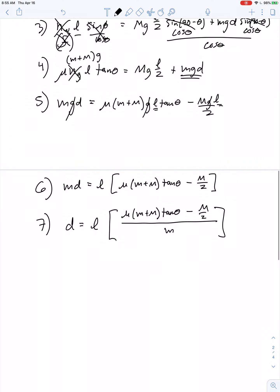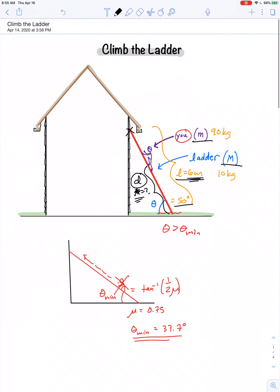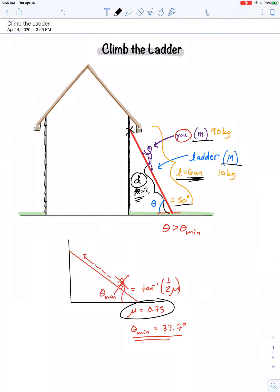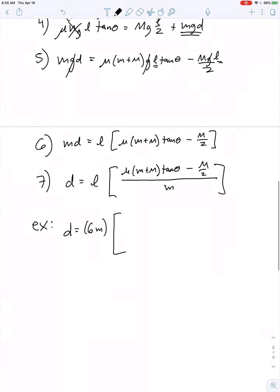Let's see what we get if we plug in the values given in this example problem. We would get d equals 6 meters times, I believe we said the coefficient of friction is 0.75, times, his mass is 90, the mass of the ladder is 10, so this comes out to 100, and then he leaned the ladder at 50 degrees, and then capital M over 2, that would be 10 over 2 which gives us 5.